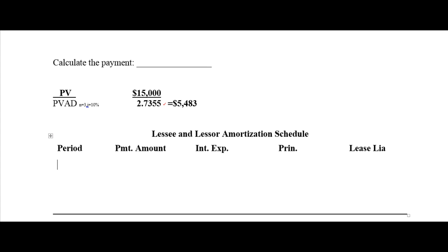If you're using the chart, you'll notice that the interest factor from Table 6 is 2.7355. Divide $15,000 by that and you'll come up with a payment of $5,483. That would be the payment amount to recover a $15,000 investment over 3 years at 10% with payments collected at the beginning.